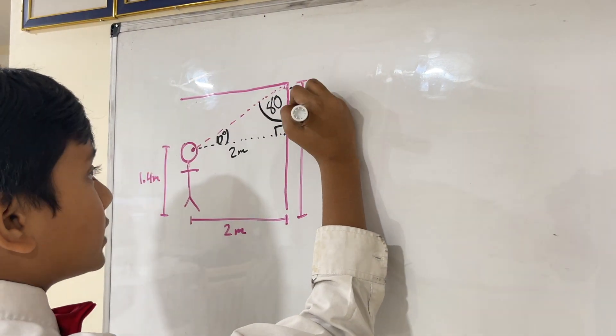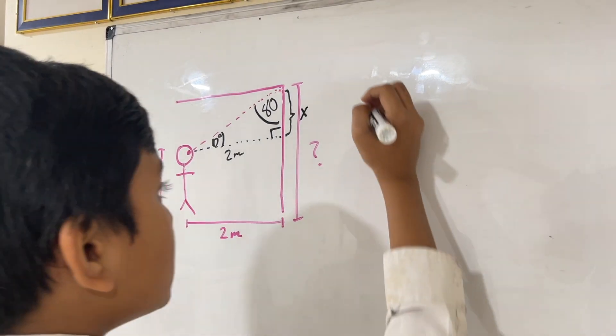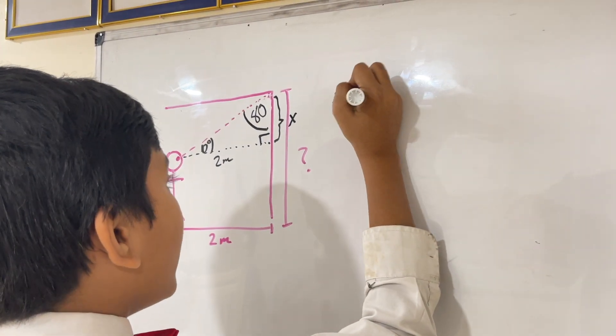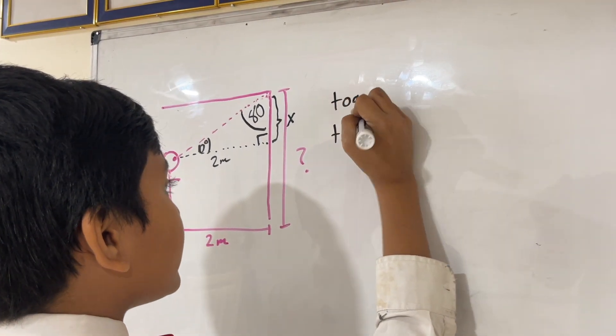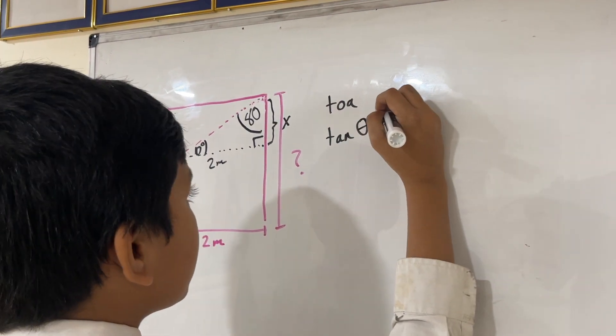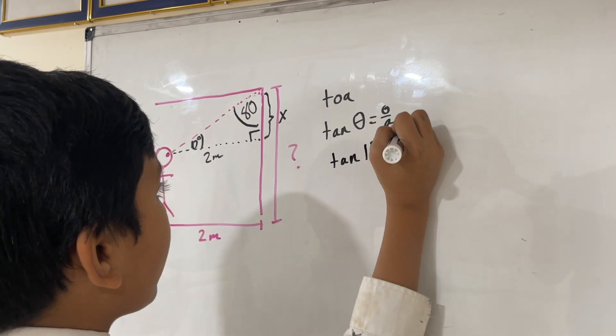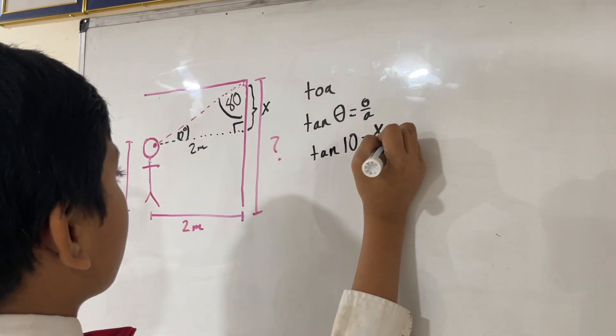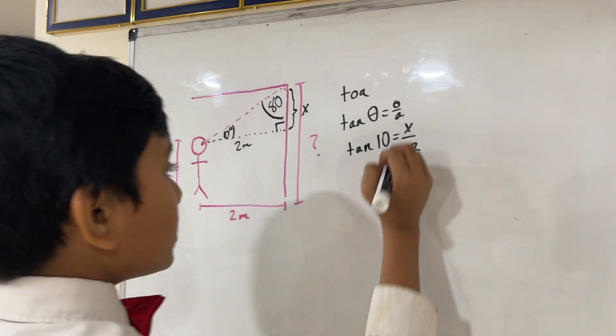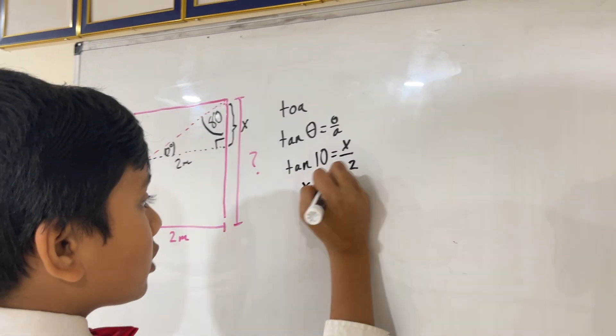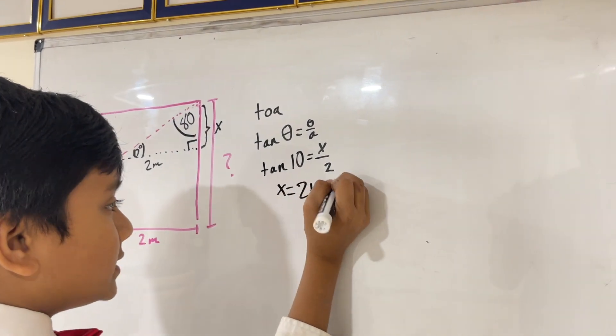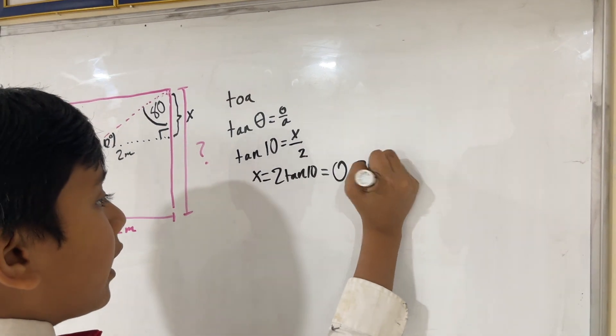So let's call this length x. Tan theta is equal to opposite over adjacent. Tan 10 is equal to our variable x over 2. So now, that means x is equal to 2 tan 10, and what is that? It's 0.35 meters.